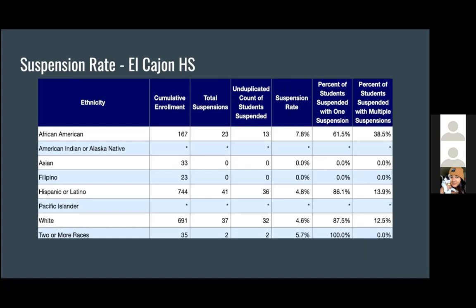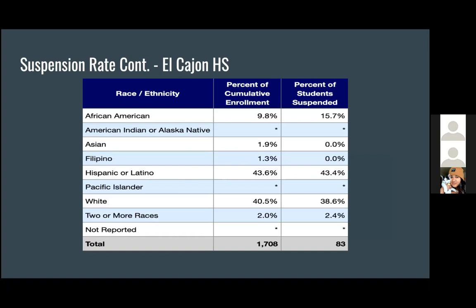Looking at El Cajon High School, white and Hispanic are the top dominant groups — Hispanic at 41 suspensions and white at 37. Again I want to highlight the African American group: over 50% are being suspended at least once, and almost 40% are receiving multiple suspensions, whereas the other two ethnicities are under 15% for multiple suspensions. This is a significantly lower rate compared to African Americans.